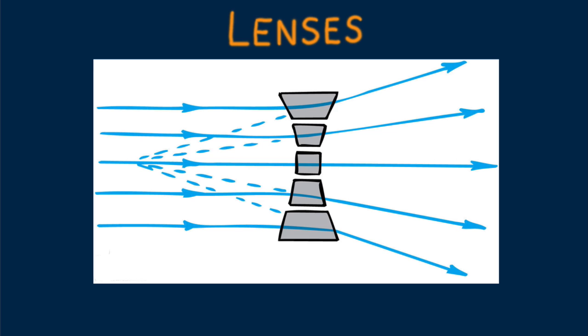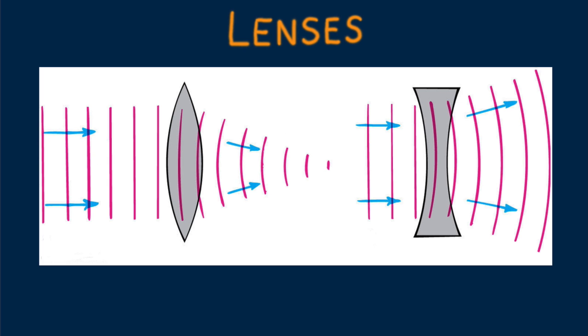Real lenses are not made of prisms and are made of solid pieces of glass with surfaces that are often ground to a spherical shape. We see here how smooth lenses refract waves. Sample wavefronts are shown in red.